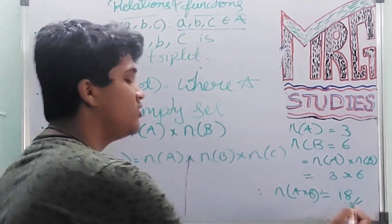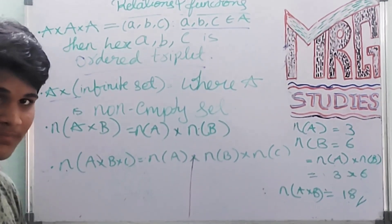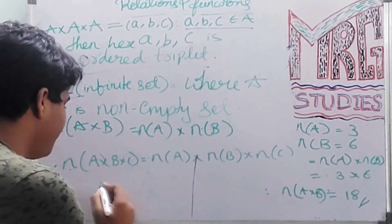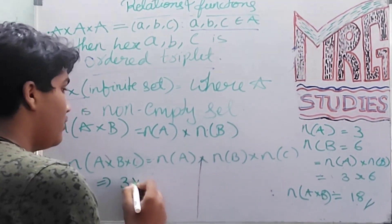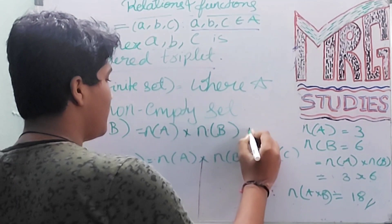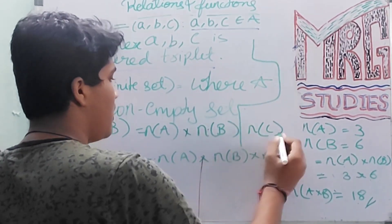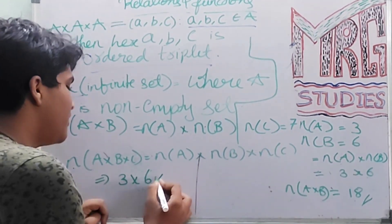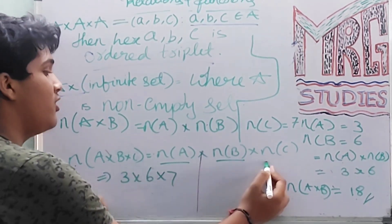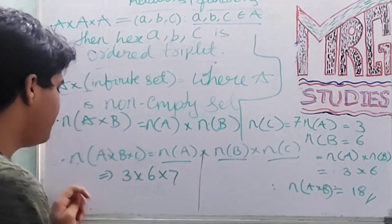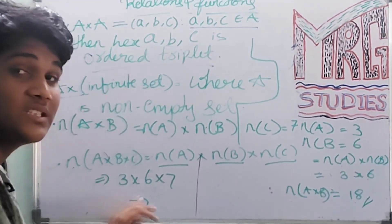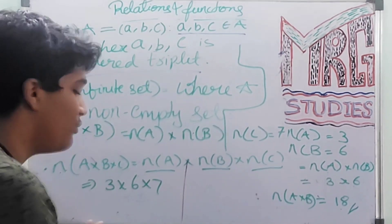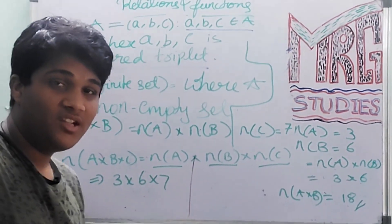Last point: N(A×B×C) = N(A) × N(B) × N(C). Using the same values — N(A) = 3, N(B) = 6 — and let's take N(C) = 7. So the answer is 3 × 6 × 7 = 126. If you got this answer, please put it in the comment box.